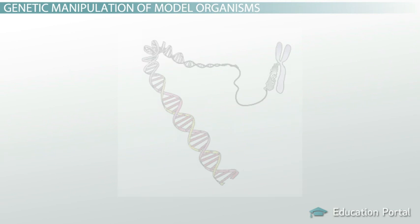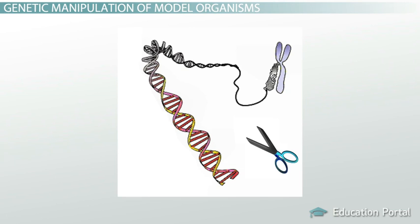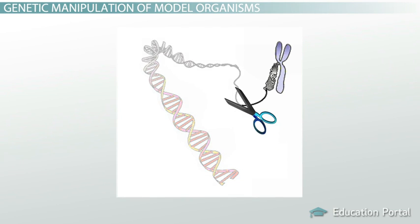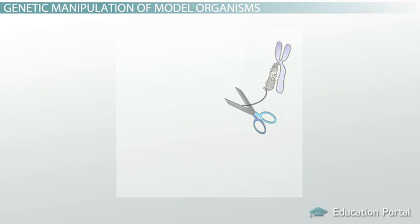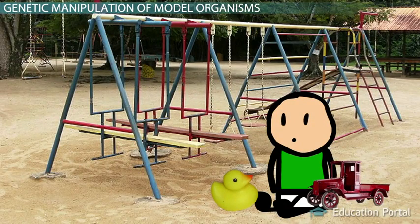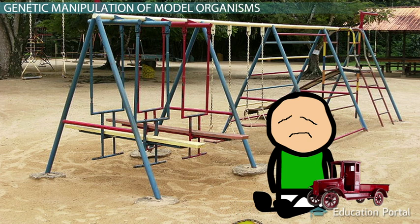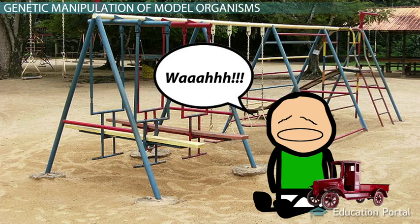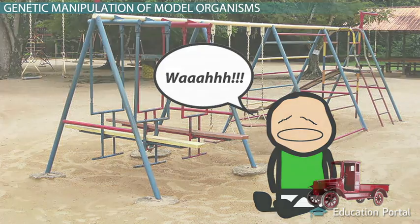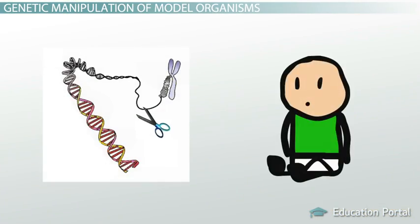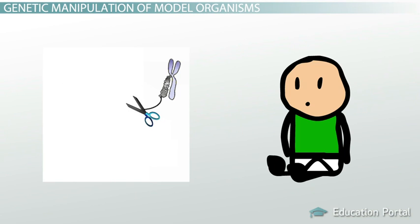So one way to investigate the function of a new gene is to just remove the gene and then observe what happens to the organism. This is like taking away a kid's toy and observing the reaction. Maybe the child won't care, maybe the child won't even notice, maybe it'll attach to another toy or find a new one, or maybe the child will start a horrendous temper tantrum. Until you take the toy away, you just don't know the value of that toy to that child. Until we take a gene away from an organism's genome, we don't know the value or purpose of that gene to that organism.